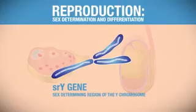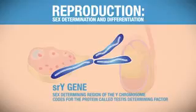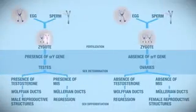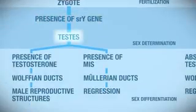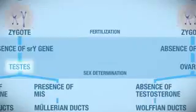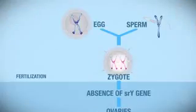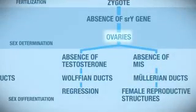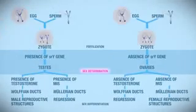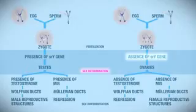The SRY gene codes for a protein called testis determining factor. When the embryo inherits the Y chromosome and therefore the SRY gene, this gene causes the primitive gonads to develop into testes. If the embryo does not inherit the Y chromosome and therefore the SRY gene, the primitive gonads develop into ovaries. Sex determination is therefore based on the presence or absence of a Y chromosome and the SRY gene.